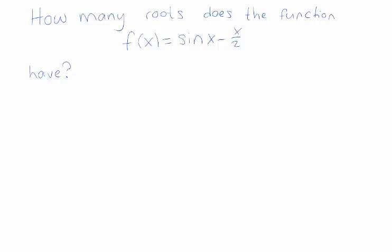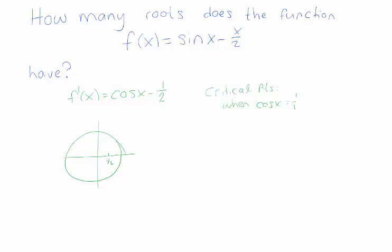The question is: how many roots does this function have? Let's start by figuring out how many critical points it has. The derivative is cos(x) minus one half, so we have a critical point when cos(x) = 1/2. Looking at the unit circle, this happens at π/3 and −π/3, and also if we add 2π to either of those — so actually we have infinitely many critical points.